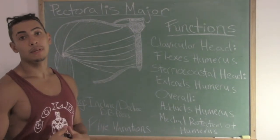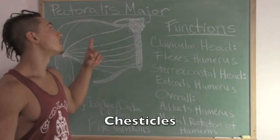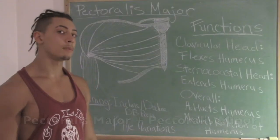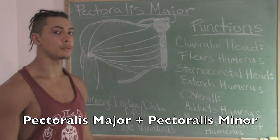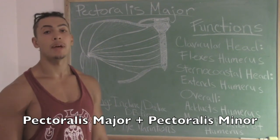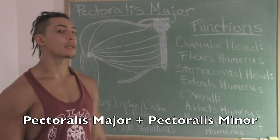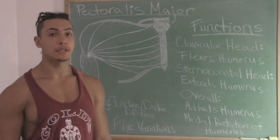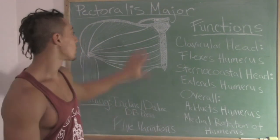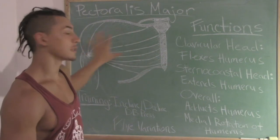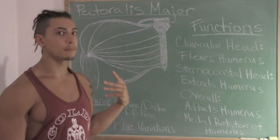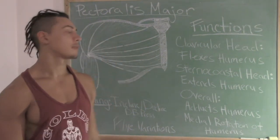What's up everyone? Today I'm going to talk about chest anatomy. The chest is made up of two muscles: the pectoralis major and the pectoralis minor. The pectoralis major is this large fan-like muscle that pretty much makes up your whole entire chest.